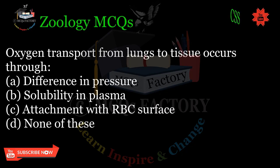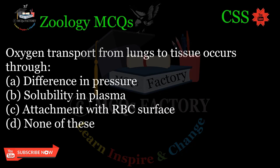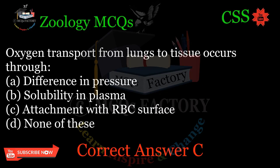Oxygen transport from lungs to tissue occurs through: A. Difference in pressure, B. Solubility in plasma, C. Attachment with RBC surface, D. None of these. Correct answer: C.